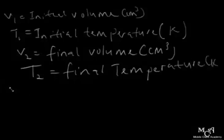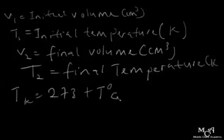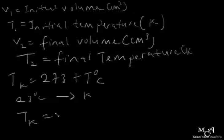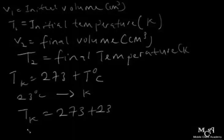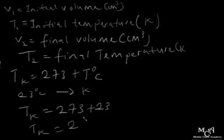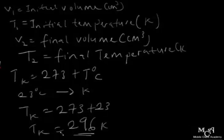To convert degrees Celsius to Kelvin: T(K) = 273 + T(°C). For example, if you are given 23 degrees Celsius and asked to convert to Kelvin, you add 273, so T(K) = 273 + 23 = 296 Kelvin.